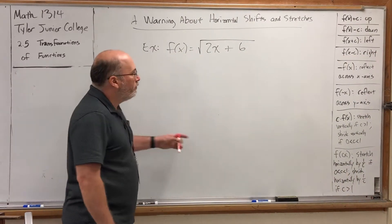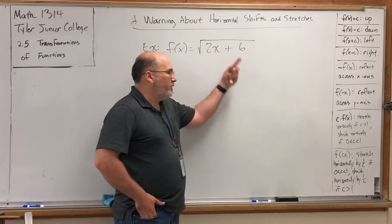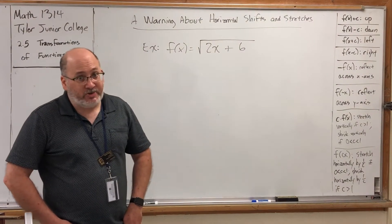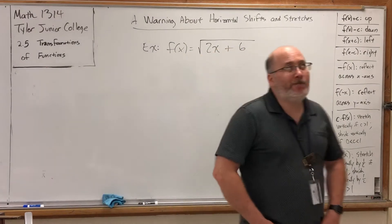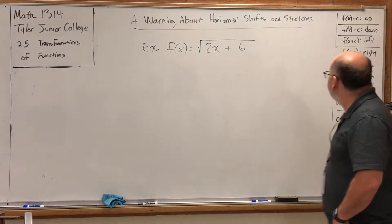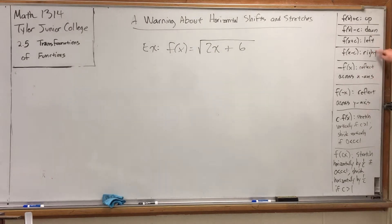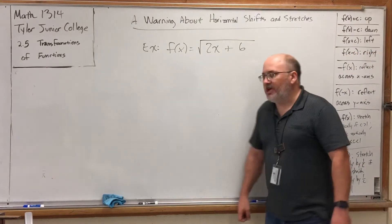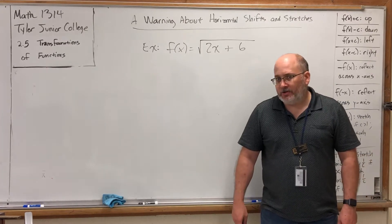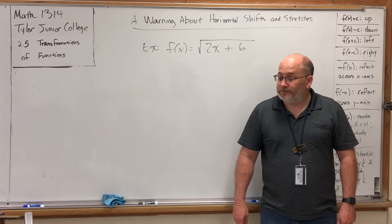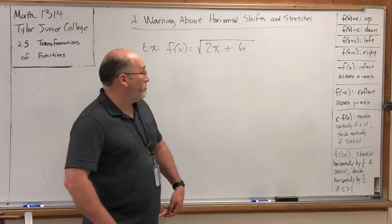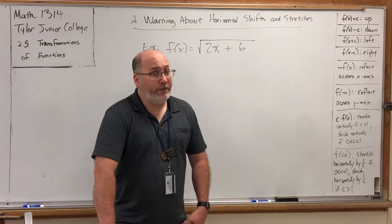Here's my question to you. We know this is going to shift to the left because it's added, but how far is it going to shift to the left? You would probably say 6 because it says plus 6. But here's where things get delicate. A horizontal shift is invoked by a number added or subtracted to the X. What is the 6 added to? Not X — it's added to 2X. This does not invoke a shift to the left of 6. This actually invokes a shift to the left of 3.